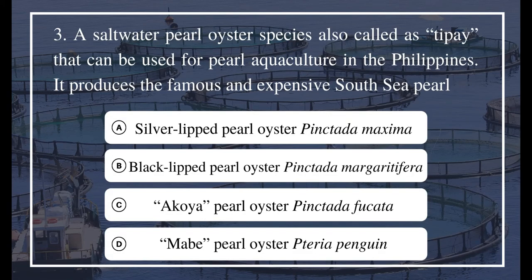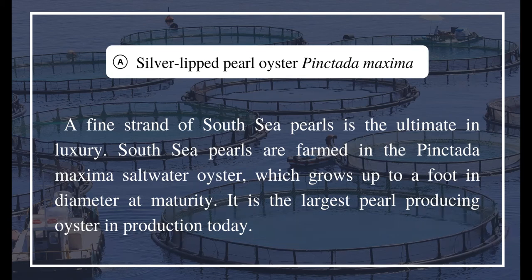Question 3: A saltwater pearl oyster species also called 'Taipei' that can be used for pearl aquaculture in the Philippines — it produces the famous and expensive South Sea pearl. Options: a) Silver-lipped pearl oyster Pinctada maxima, b) Black-lipped pearl oyster Pinctada margaritifera, c) Akoya pearl oyster Pinctada fucata, d) Mabe pearl oyster Pteria penguin. The answer is A, silver-lipped pearl oyster Pinctada maxima. A fine strand of South Sea pearls is the ultimate in luxury; South Sea pearls are farmed in the Pinctada maxima saltwater oyster, which grows up to a foot in diameter at maturity and is the largest pearl-producing oyster in production today.